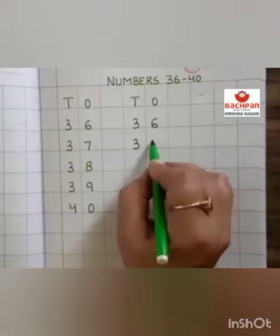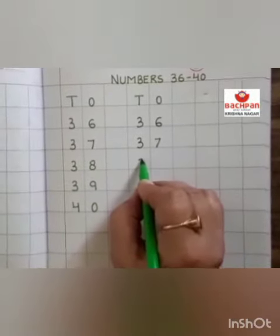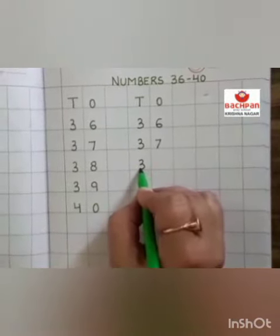3, 7, 37. After 37, which number has come? Yes. 38.